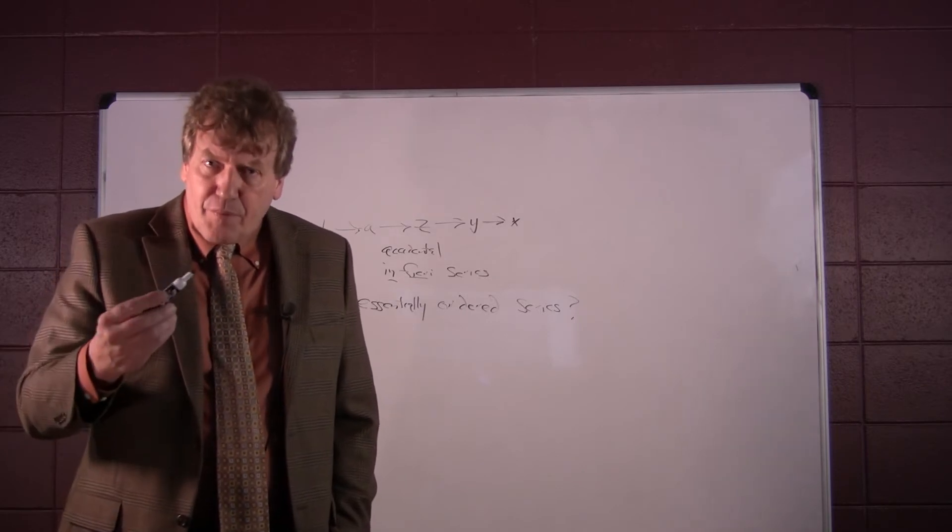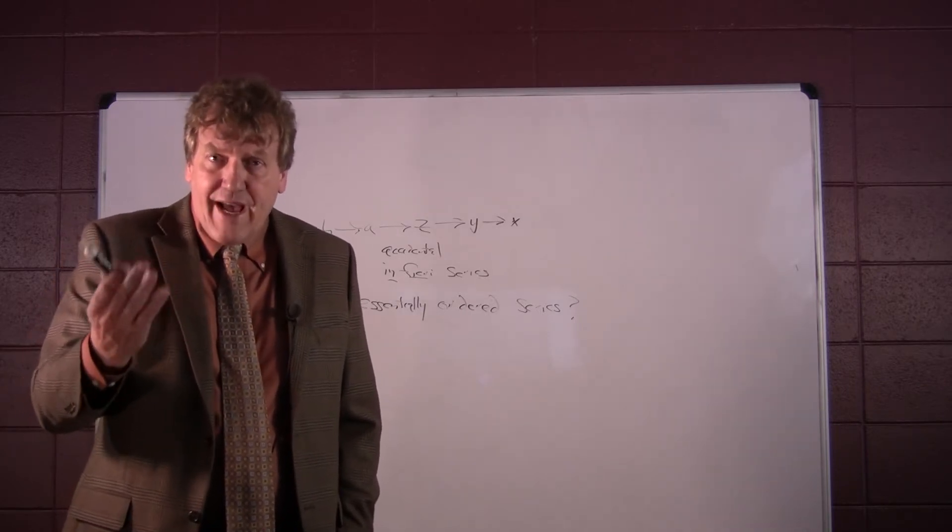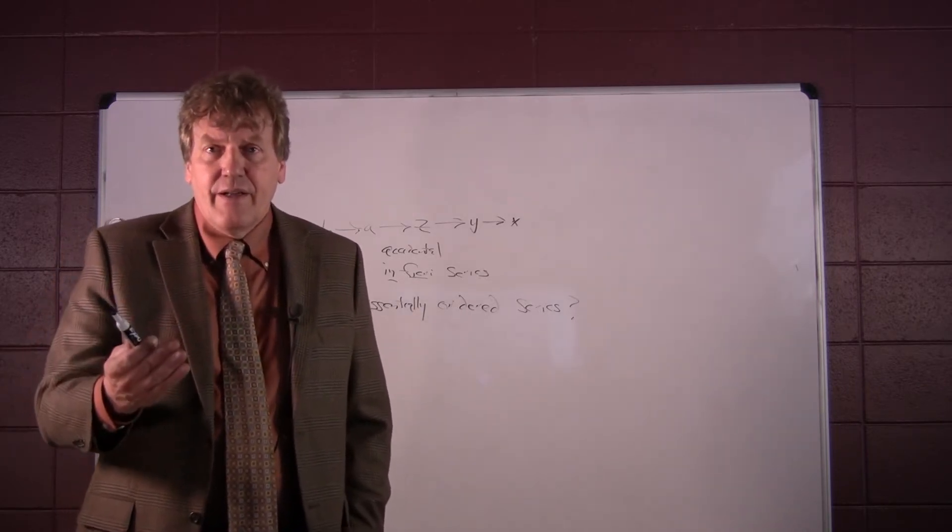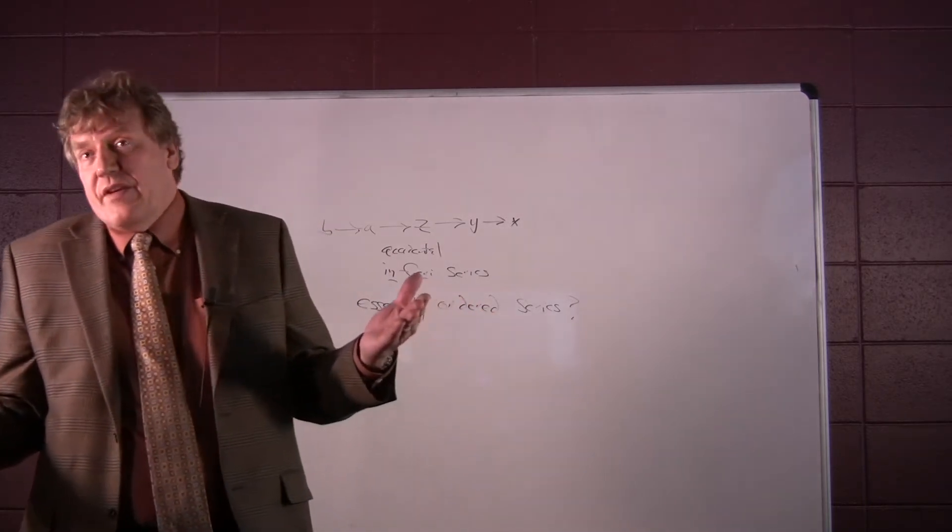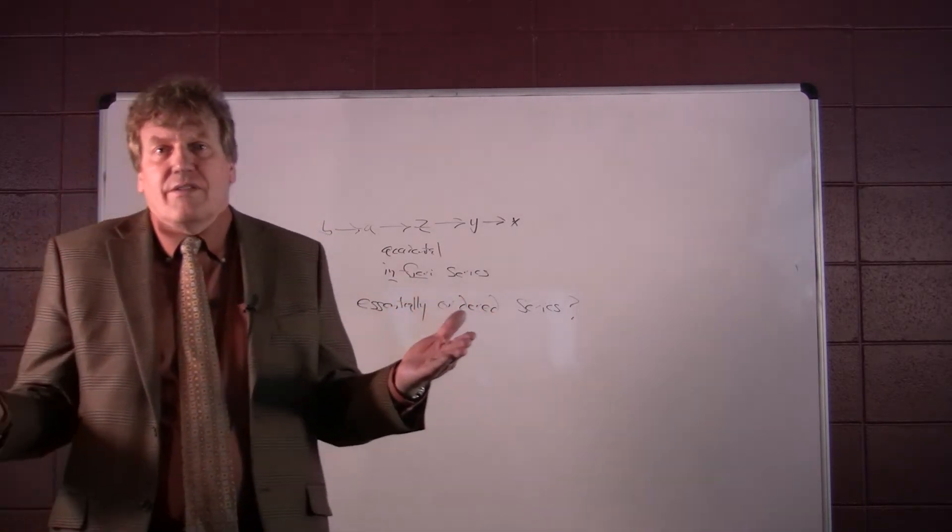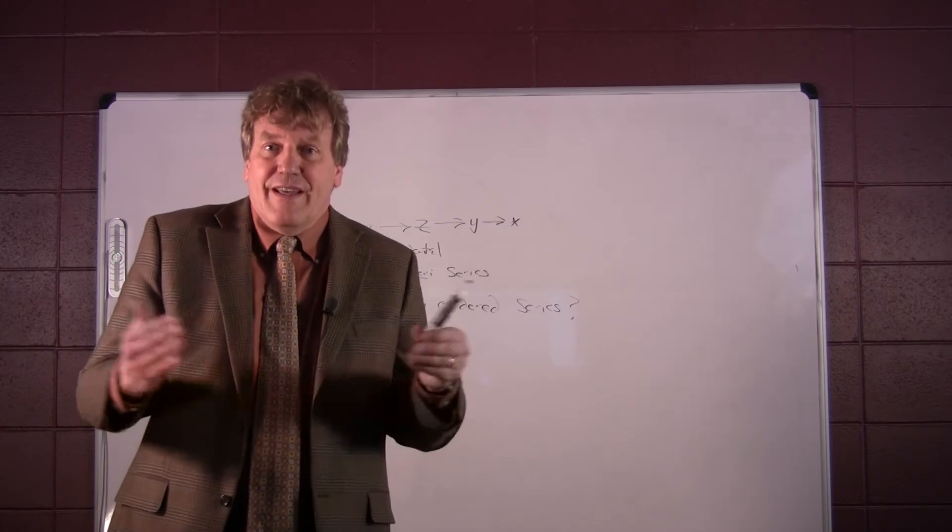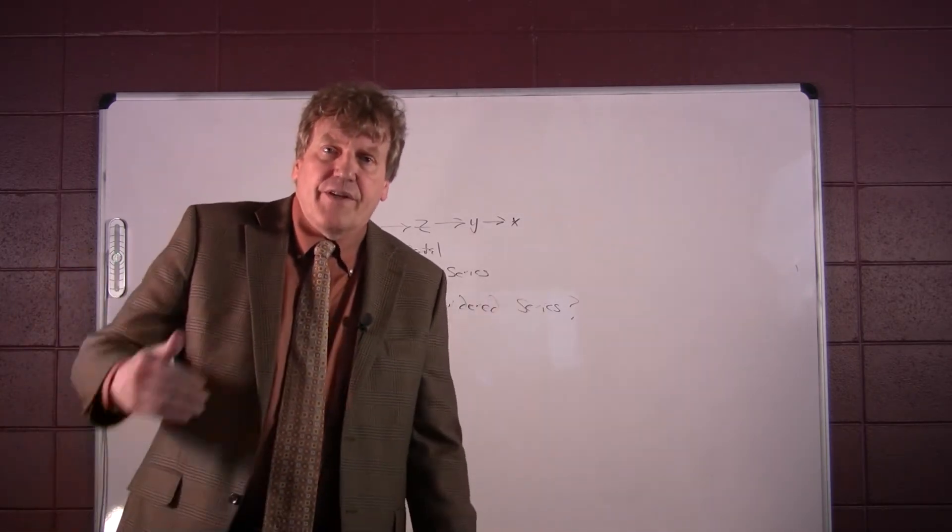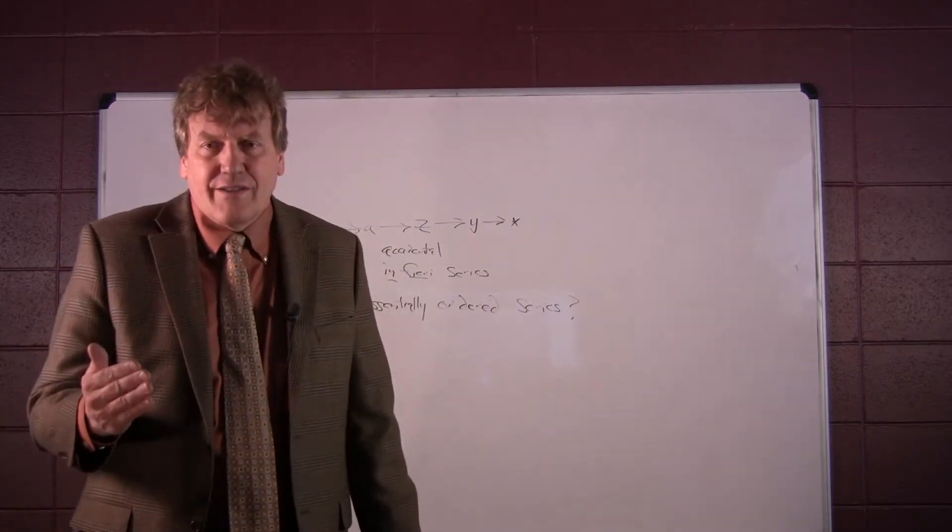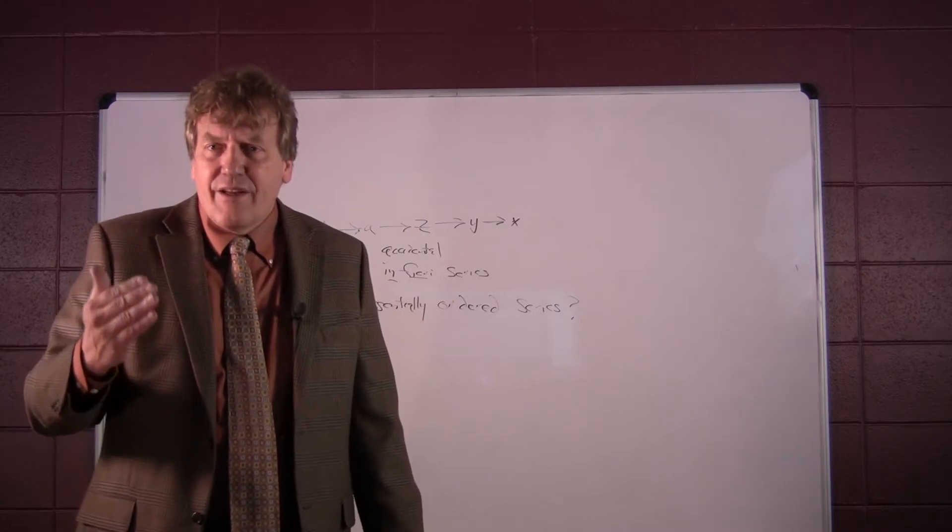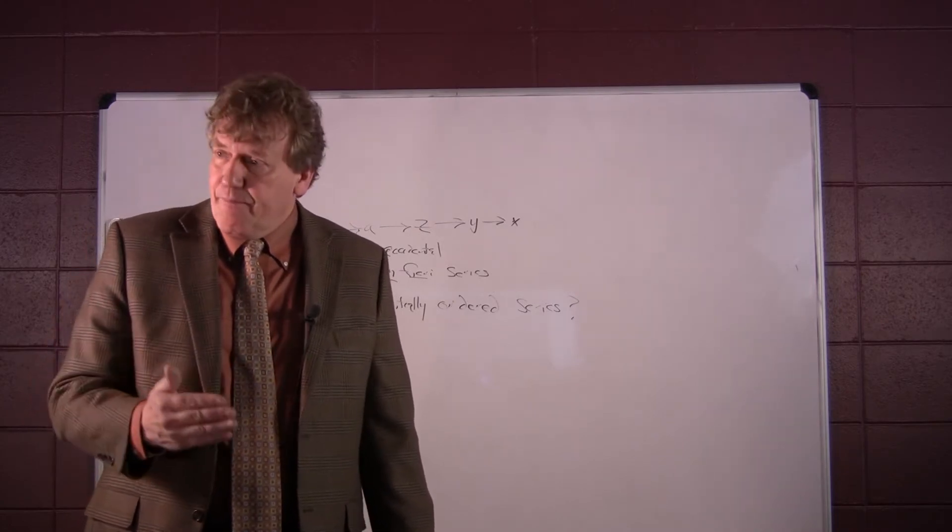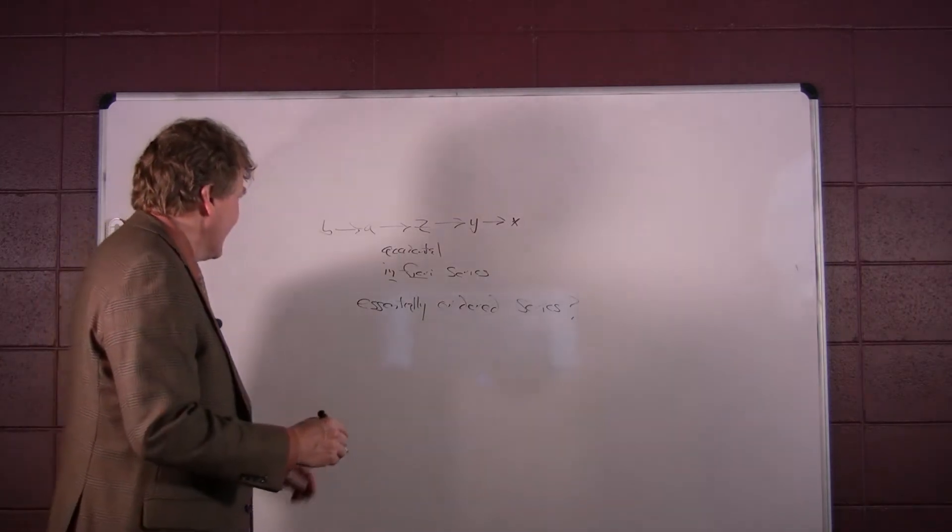But nothing can be an essentially ordered cause of itself. And if this prior cause were part of the totality of things affected, it would be part of the essentially ordered cause of itself. Therefore, even if there were an infinite series of essentially ordered causes, the totality of things affected would be affected by a cause outside the totality.